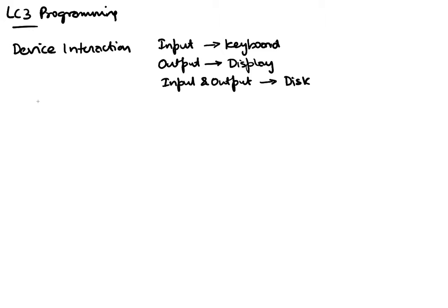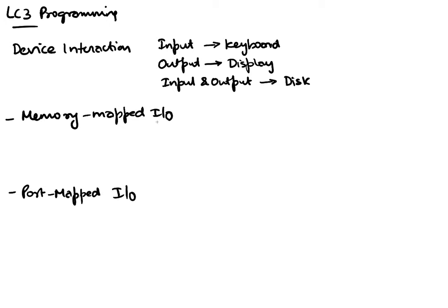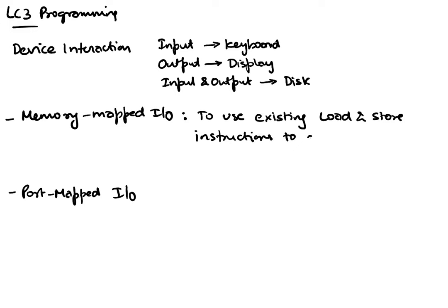The fundamental concept of interaction is done using a mechanism called memory mapped IO. There's an alternative to memory mapped IO which is called port mapped IO. The notation IO simply represents input and output. The idea behind memory mapped IO is to use existing load and store instructions to read from and write to devices.